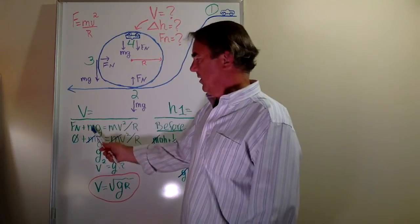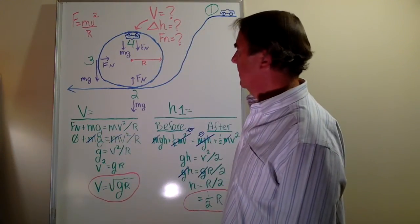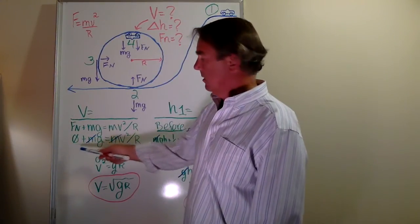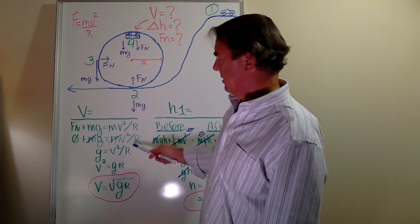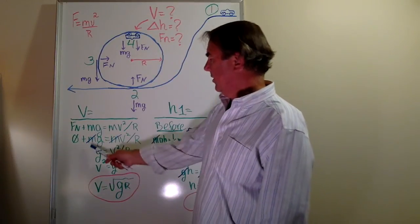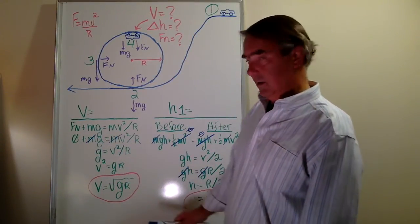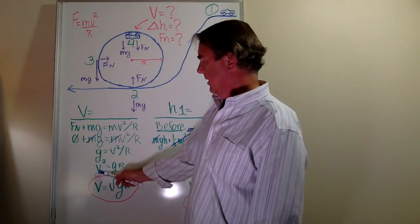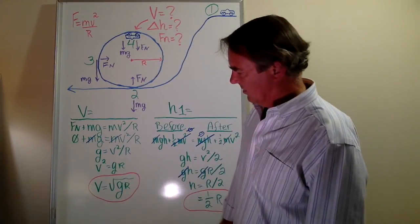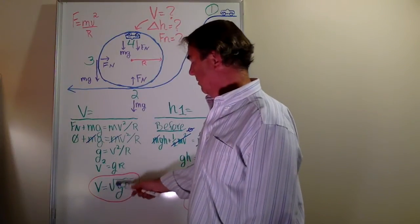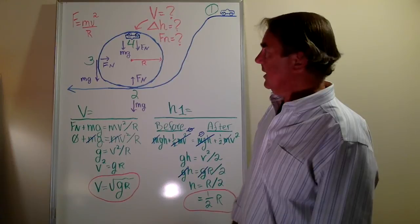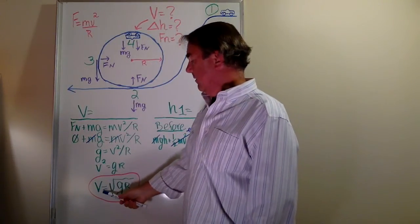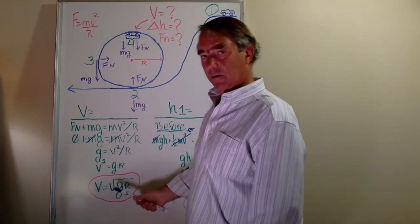The normal force and gravity are the only forces in effect. With the assumption that normal force equals zero, mass times gravity equals mass times velocity squared divided by radius. Mass exists on both sides and can be canceled, leaving gravity equal to velocity squared divided by radius. Isolating velocity and taking the square root of both sides results in velocity equal to the square root of gravity times radius. If the normal force must be greater than zero, the velocity must be greater than √(gr).